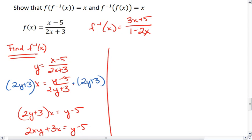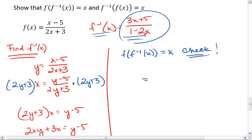Alright, now we want to check that f of f inverse of x equals x. Well, let's look at this. What we're going to do is take what f inverse of x equals and plug it in for whatever x appears in f of x. We get 3x minus 5 over 1 minus 2x minus 5 all over.